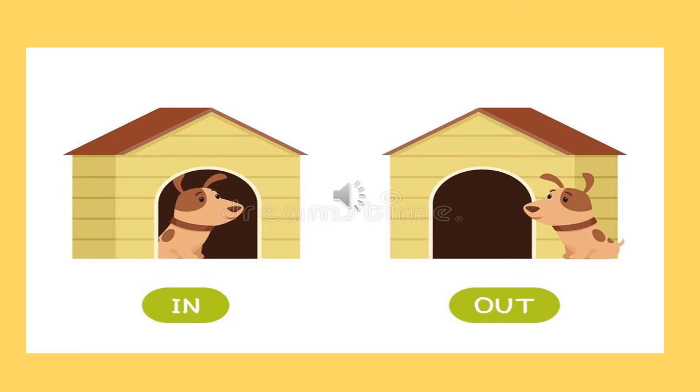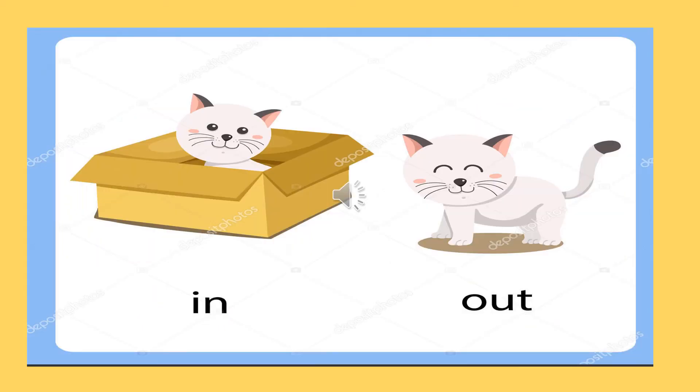In means under, out means bahar. You know children, where is the cat? In the box. And where is the other cat? Out. In means under, out means bahar.